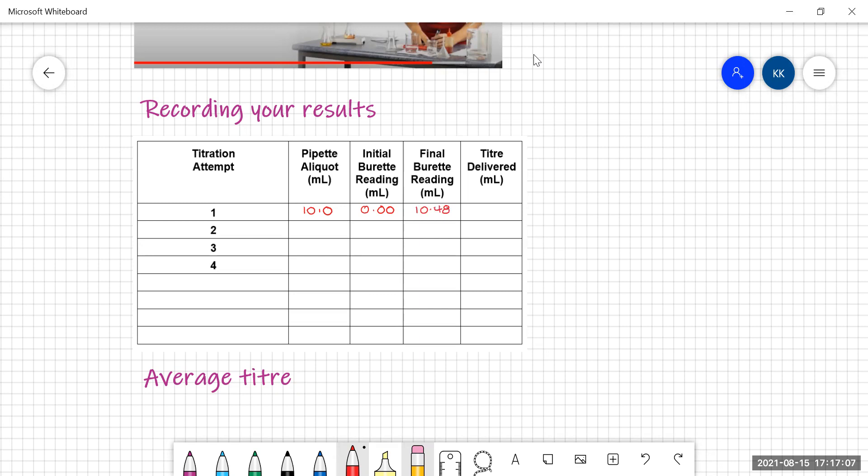Now my titer, which is the volume I've actually added, is the final burette reading minus the initial. So in this case, easy because my initial volume was zero. It doesn't have to be zero. And so my titer is 10.48.